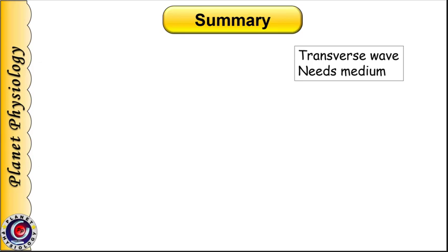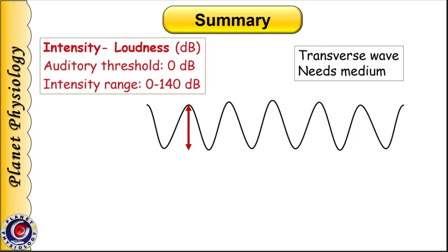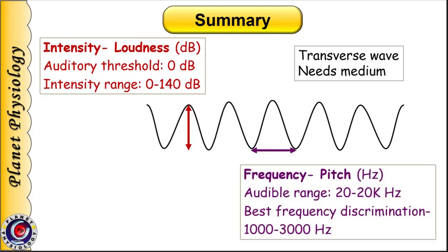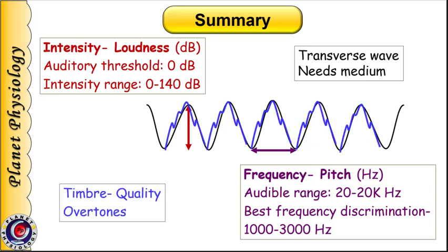To summarize: sound travels as a longitudinal wave of alternate compression and rarefaction. Amplitude of the sound waves determines its intensity and hence the loudness, measured in decibels. Zero decibel is the auditory threshold — barely audible sound — and humans can perceive sound intensities from 0 to 140 dB. Frequency of sound waves decides pitch; sound frequencies between 20 Hz to 20,000 Hz are perceived by humans and best frequency discrimination is in the range of 1,000 to 3,000 Hz. Timbre or quality of sound is determined by repeating overtones over the primary sound frequency and helps to identify various sounds.